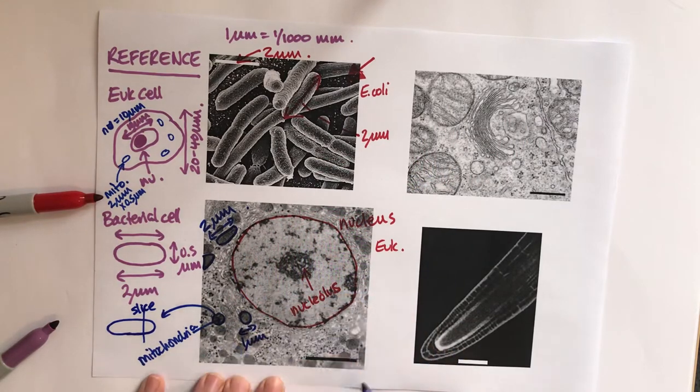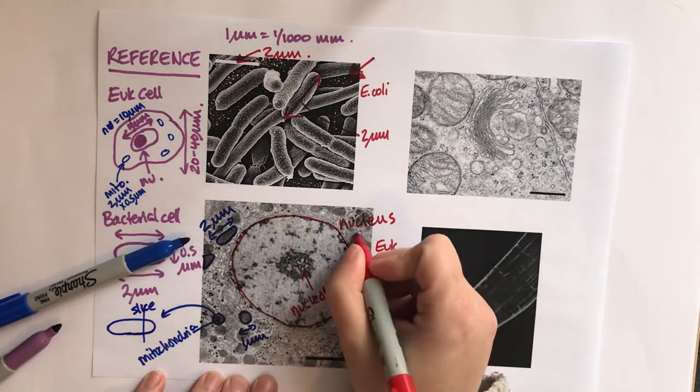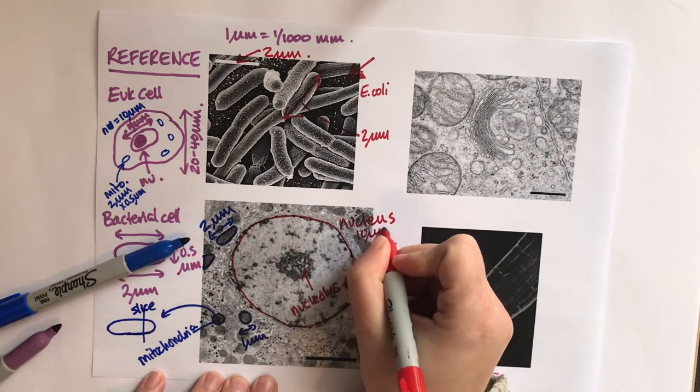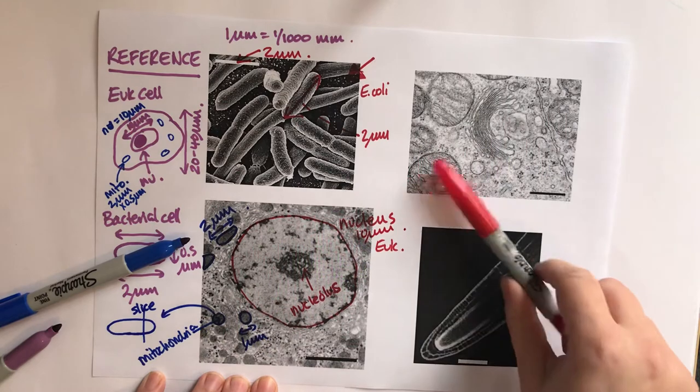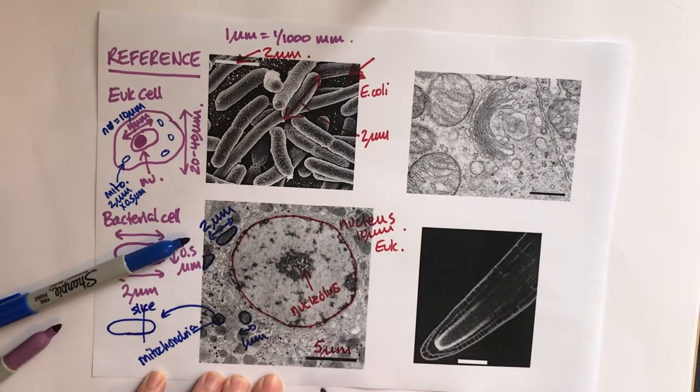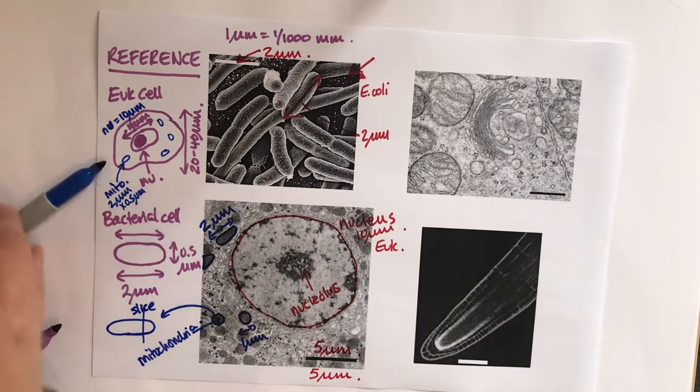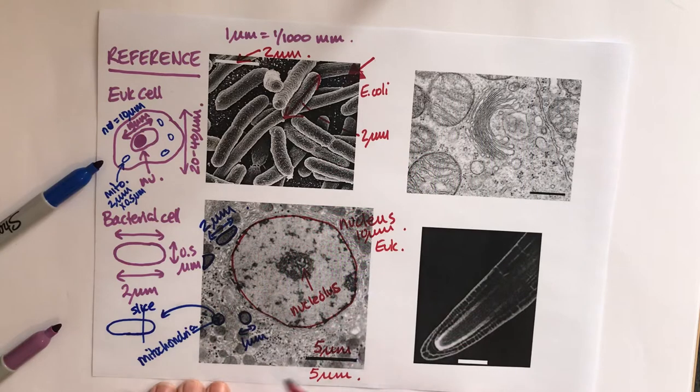Now I know what I'm looking at on my image. I know that the nucleus is going to be roughly 10 micrometers across. So that's looking about half the size of the nucleus, so I'd say that was about 5 micrometers.